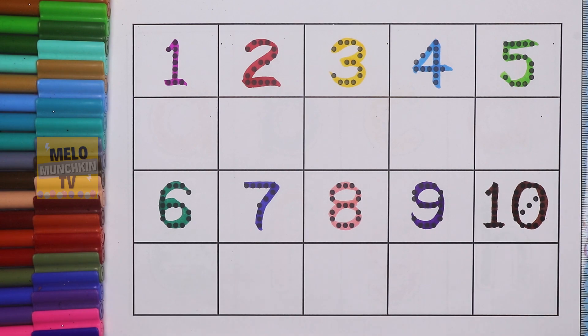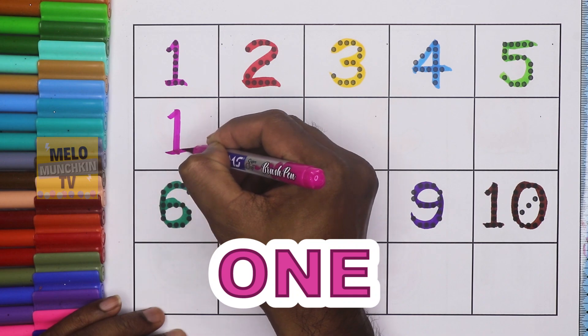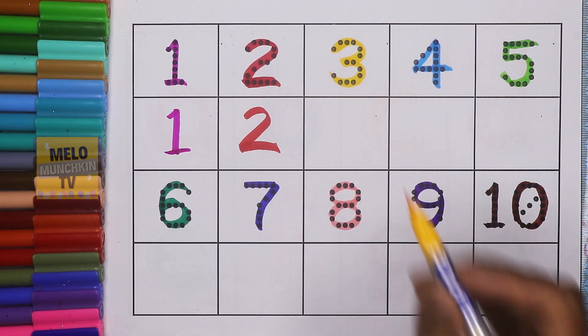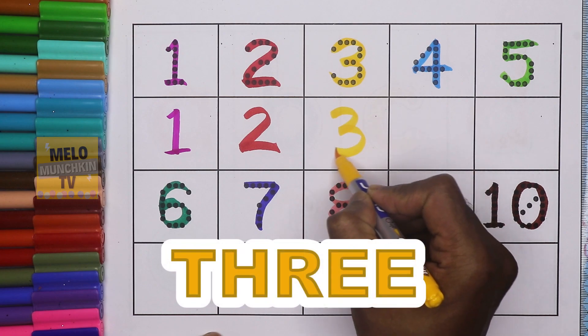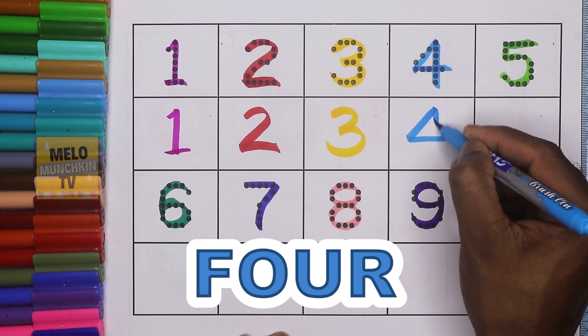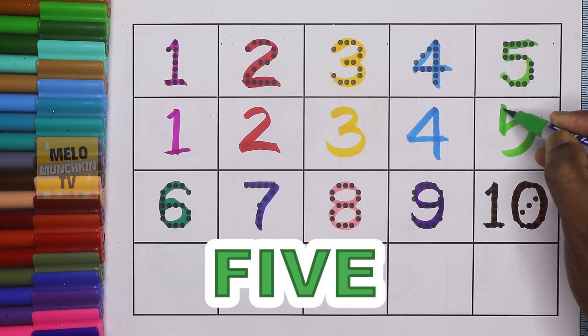So now we will repeat once again. 1. O-N-E. 1. 2. T-W-O. 2. 3. T-H-R-E-E. 3. 4. F-O-U-R. 4. 5. F-I-V-E. 5.